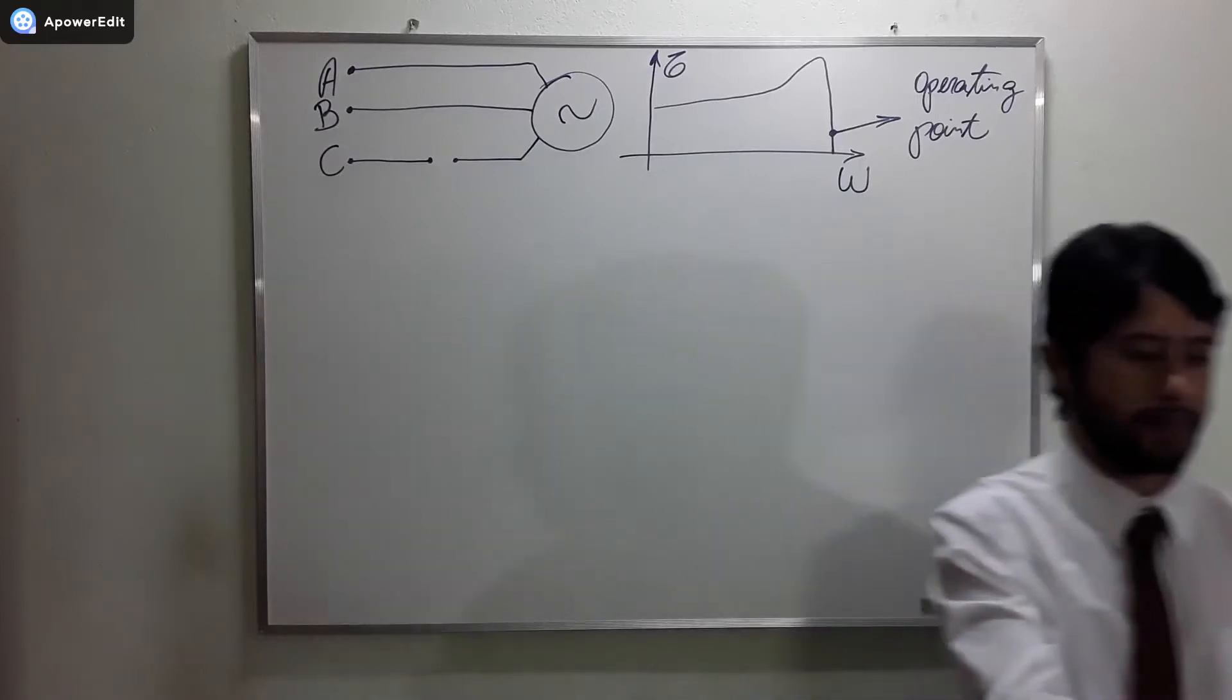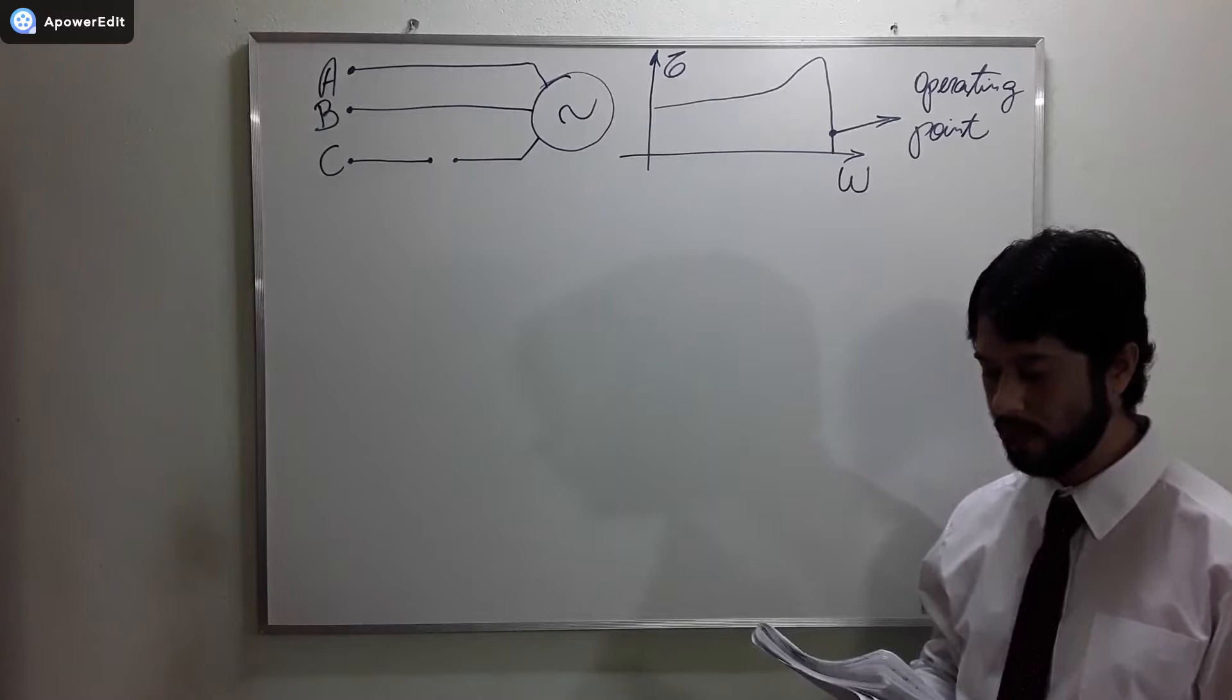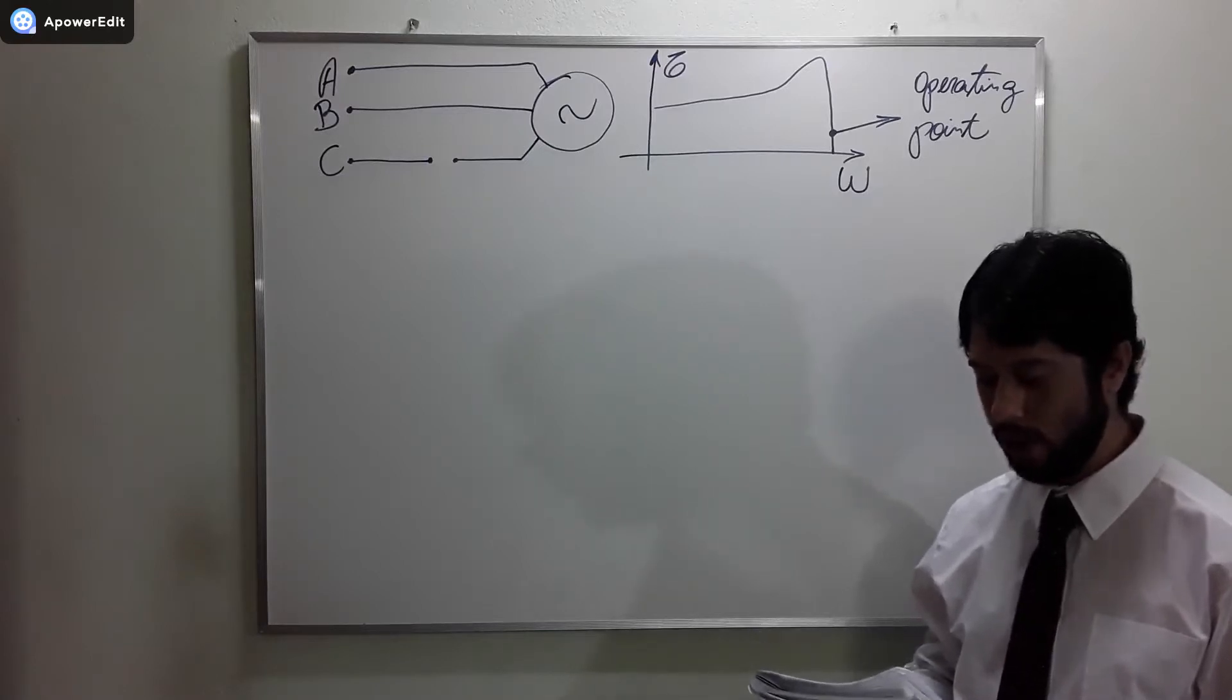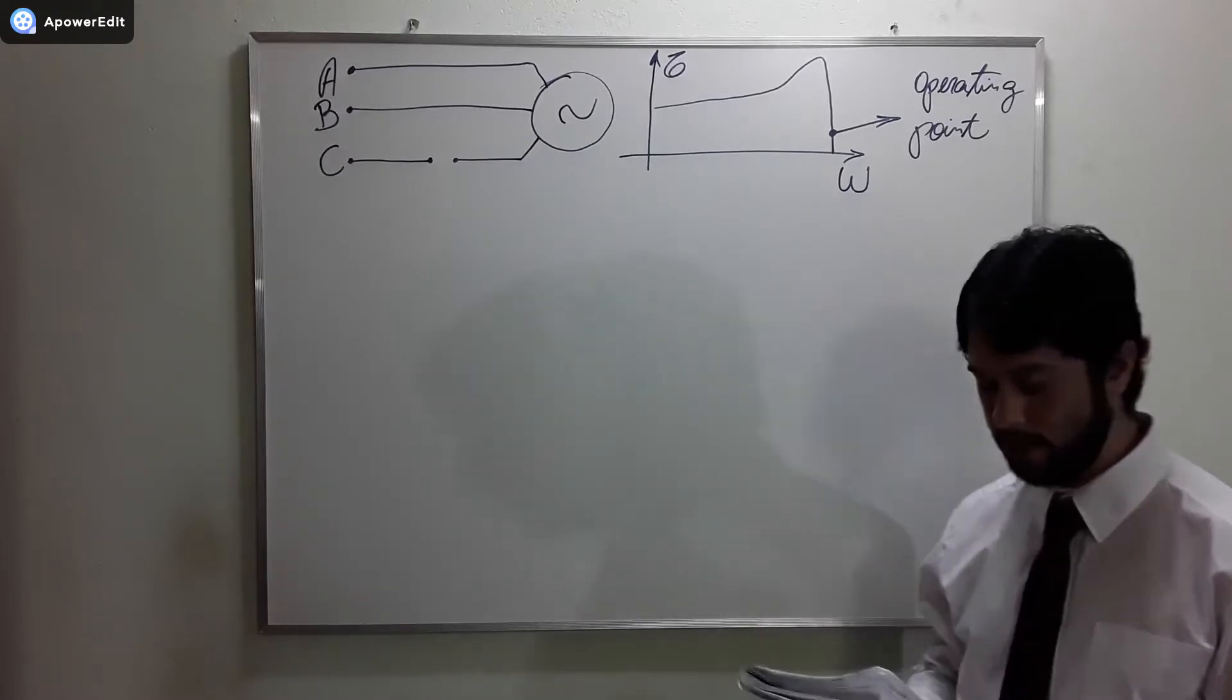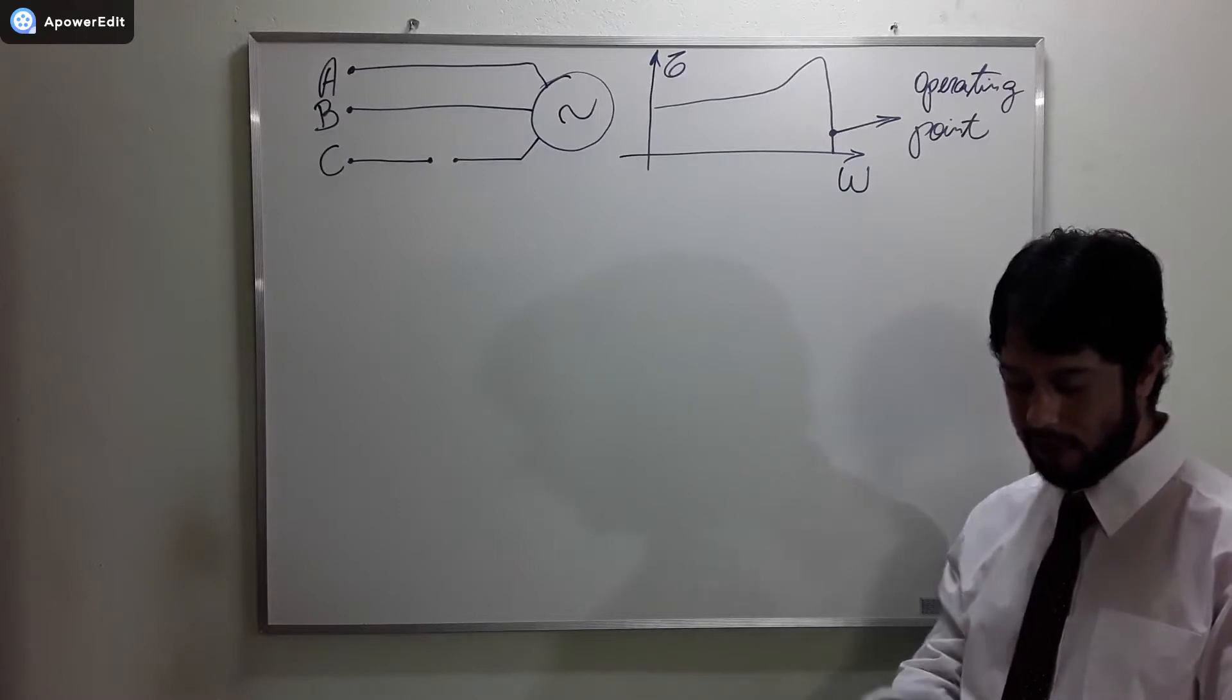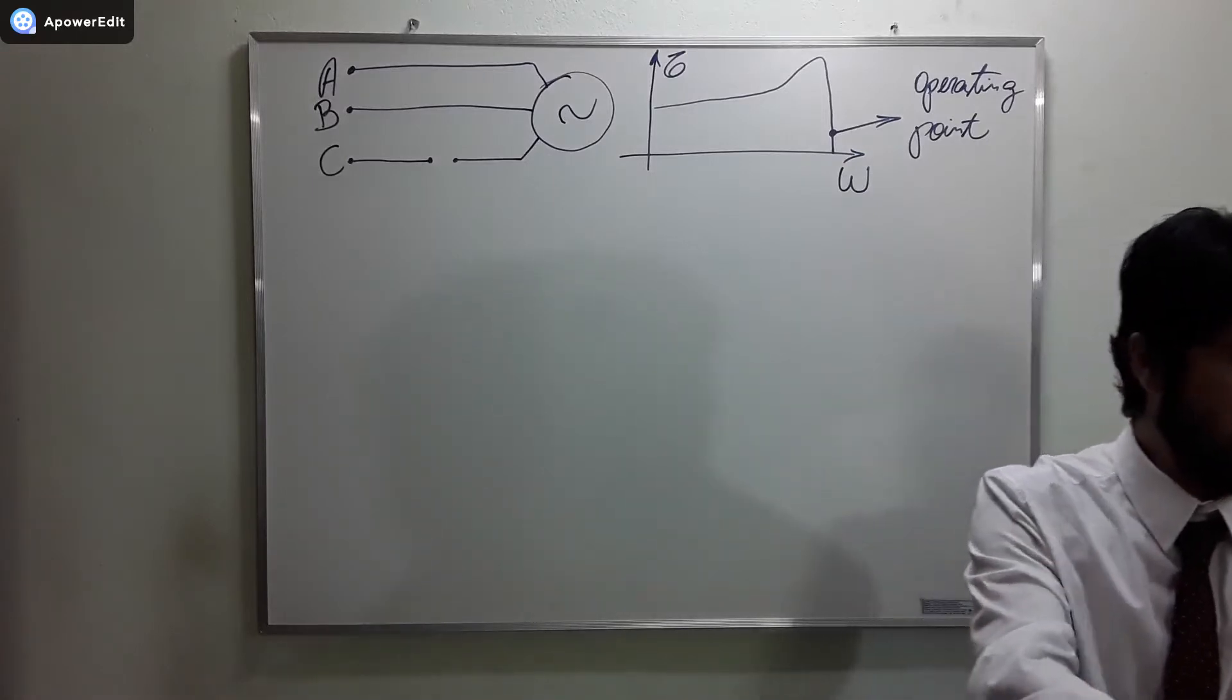Let me read the problem. A three-phase electric induction motor is running at full load when at a certain moment it loses one of the phases of its supply. In these conditions, it can be observed that the letter A, B, C, D and E, I'm not going to read the alternatives. Let's see how we understand the problem and then we judge the alternatives.